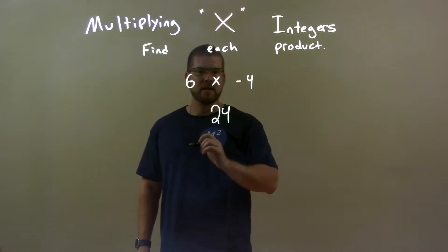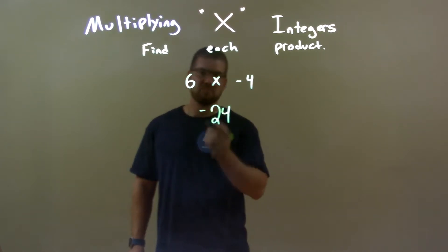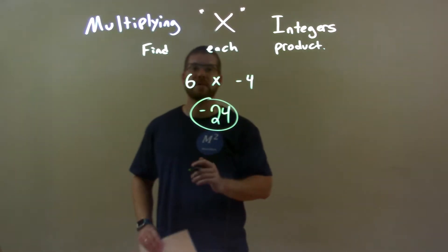But then we have a negative, so we have a positive times a negative, which is a negative. So our final answer is negative 24.